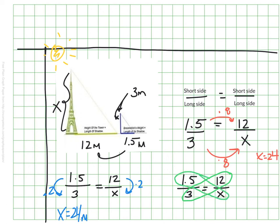And then I could divide that by 1.5. And I would also get that x is 24 meters. Either way, this all works out to be 24 meters. That means the height of my tower is 24 meters.